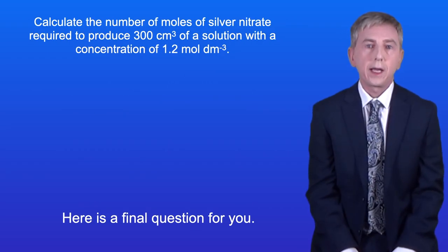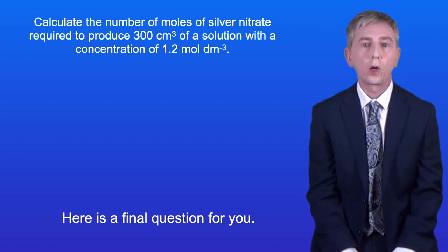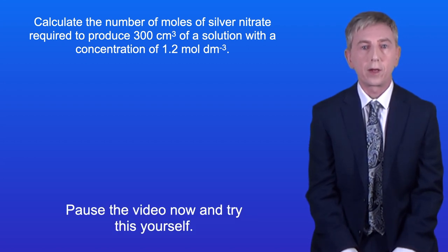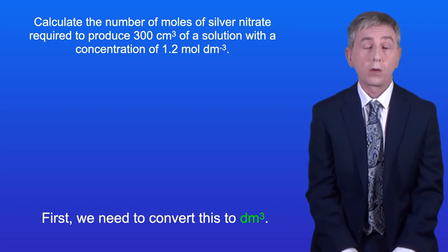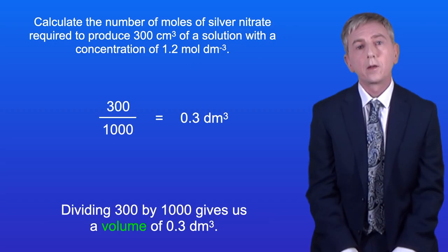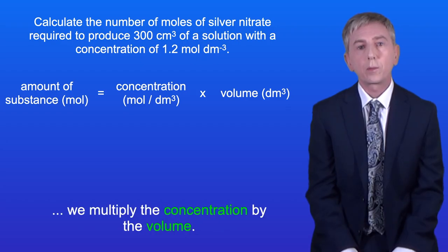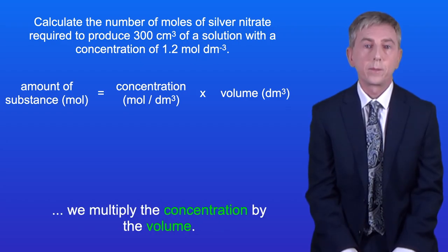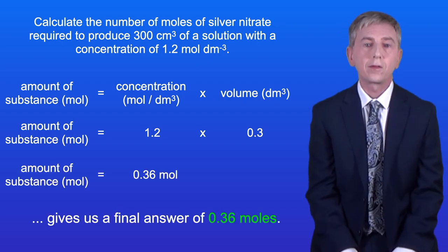Here's a final question for you. Calculate the number of moles of silver nitrate required to produce 300 centimetres cubed of a solution with a concentration of 1.2 moles per decimetre cubed. Again, the volume has been given in centimetres cubed, so first we need to convert this to decimetres cubed. Dividing 300 by 1000 gives us a volume of 0.3 dm³. To calculate the amount of substance in moles, we multiply the concentration by the volume. Multiplying 1.2 by 0.3 gives us a final answer of 0.36 moles.